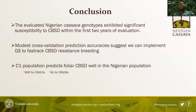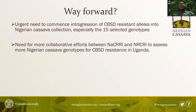In conclusion, our materials were very susceptible to cassava brown streak disease. The modest cross-validation predictions show that we can implement genomic selection to fast-track CBSD resistance in our population. The C1 population predicts foliar CBSD well in the Nigerian population. We need to commence integration of CBSD resistant alleles into the Nigerian cassava collection, starting with the 15 selected genotypes. We also need greater collaboration between NACRI and NRCRI Umudike to send more materials to Uganda for continued assessment of CBSD resistance in the Nigerian population. Thank you.